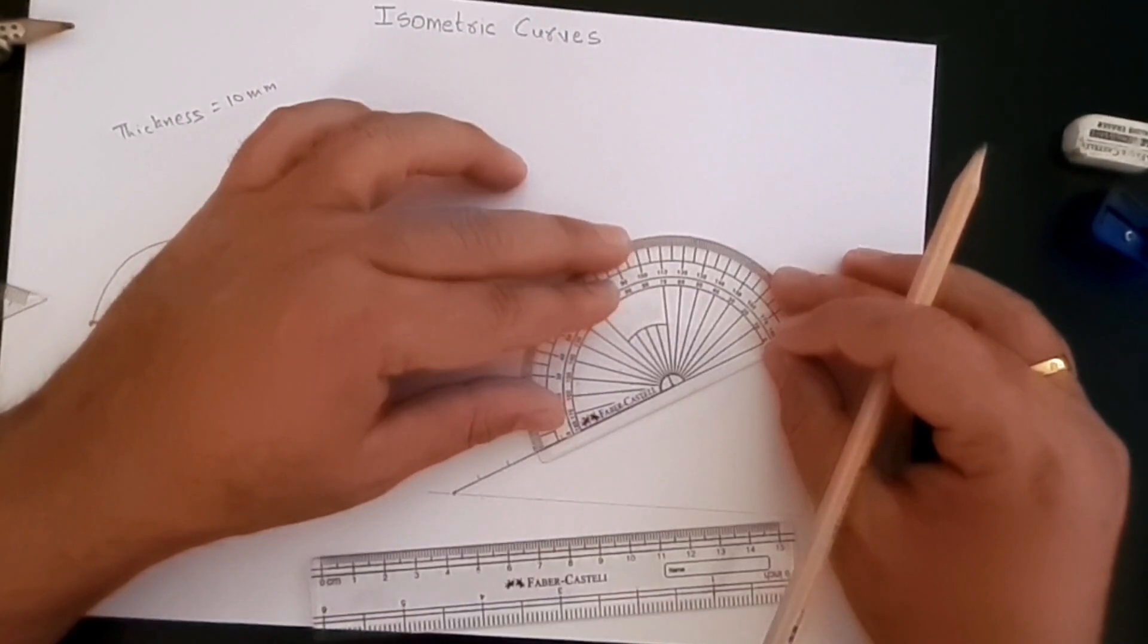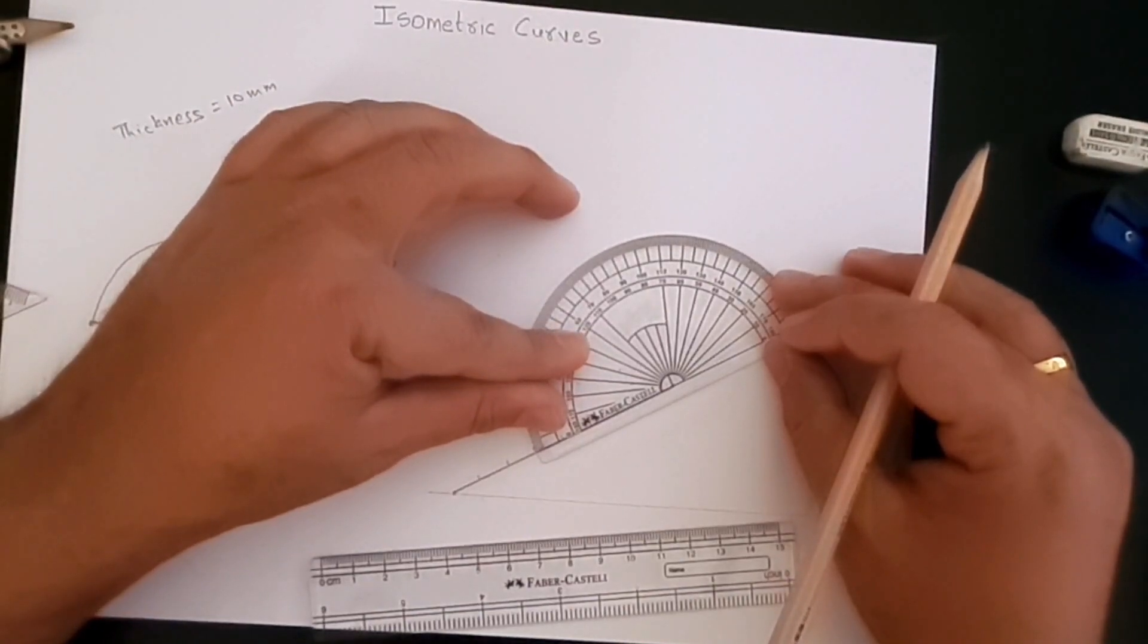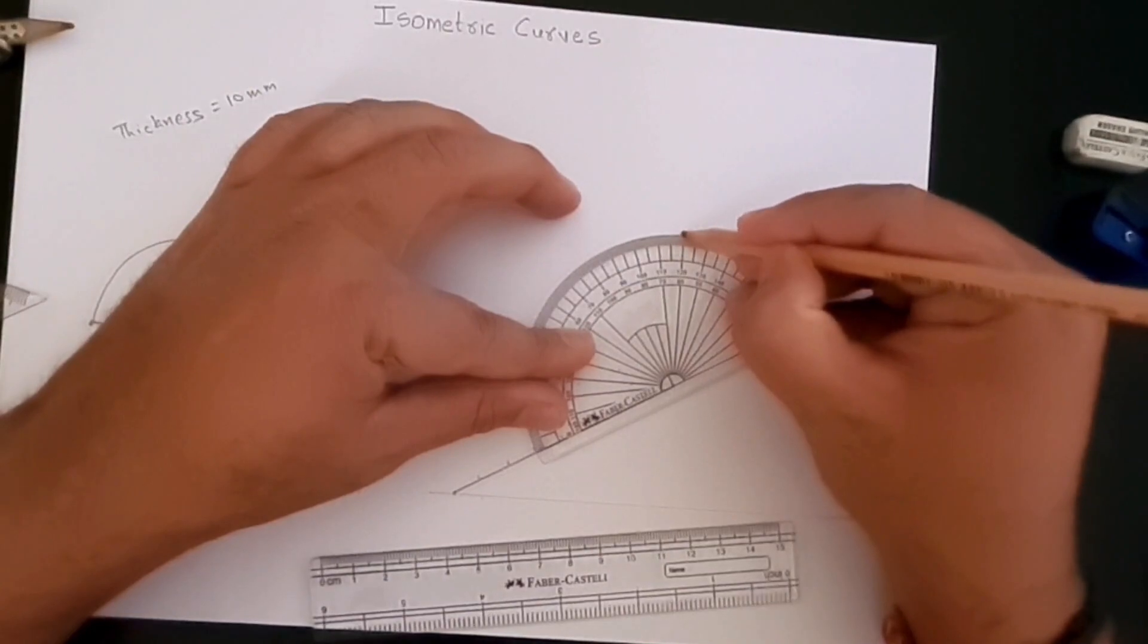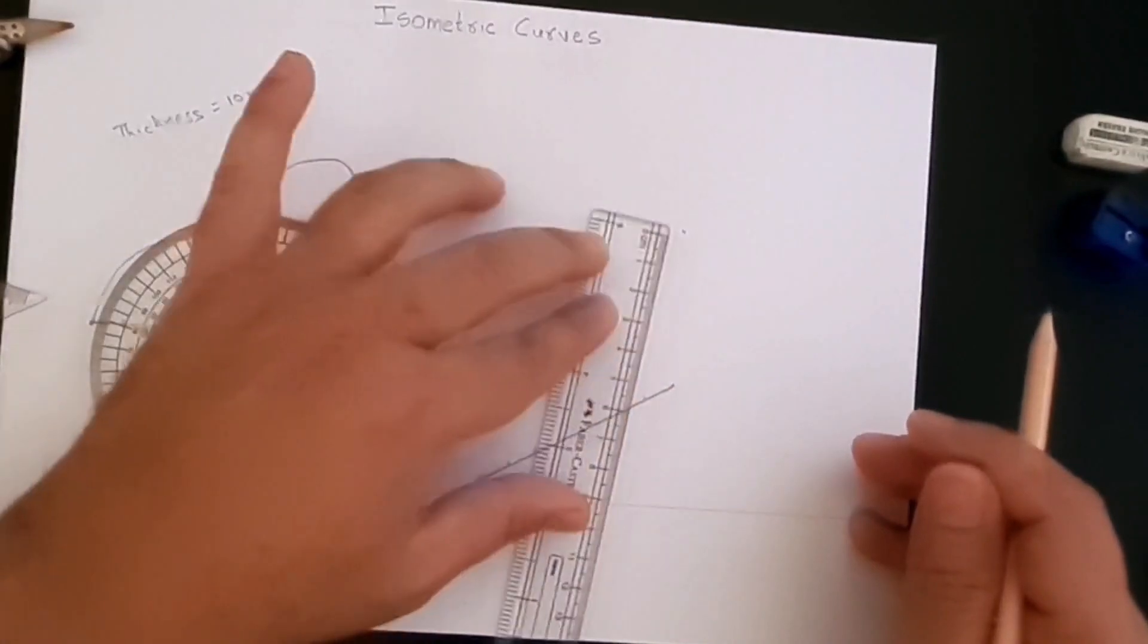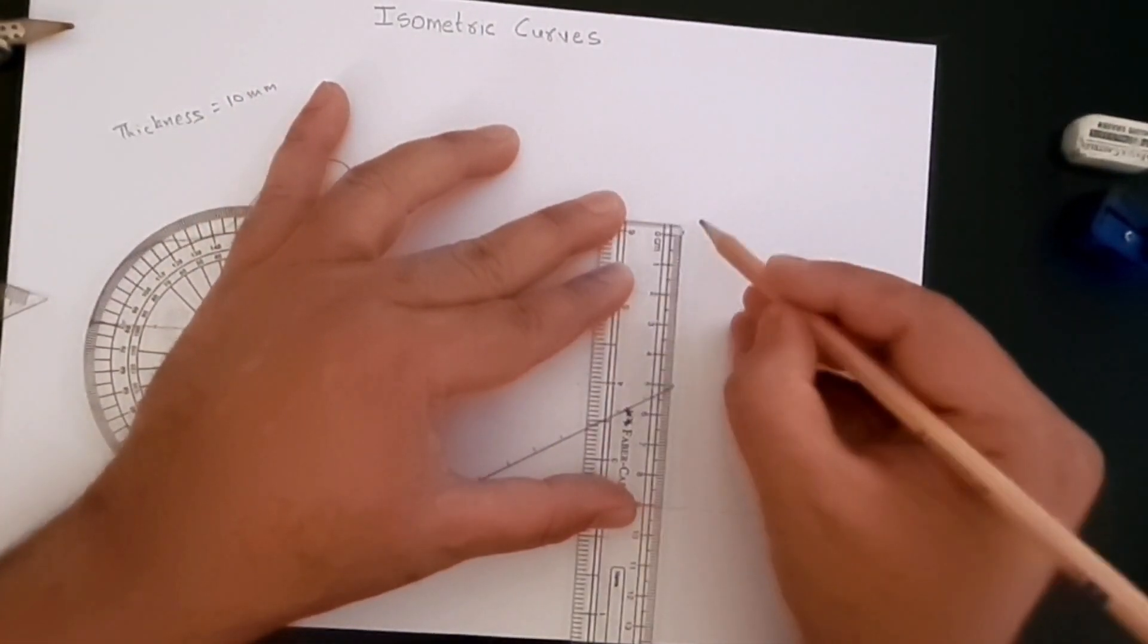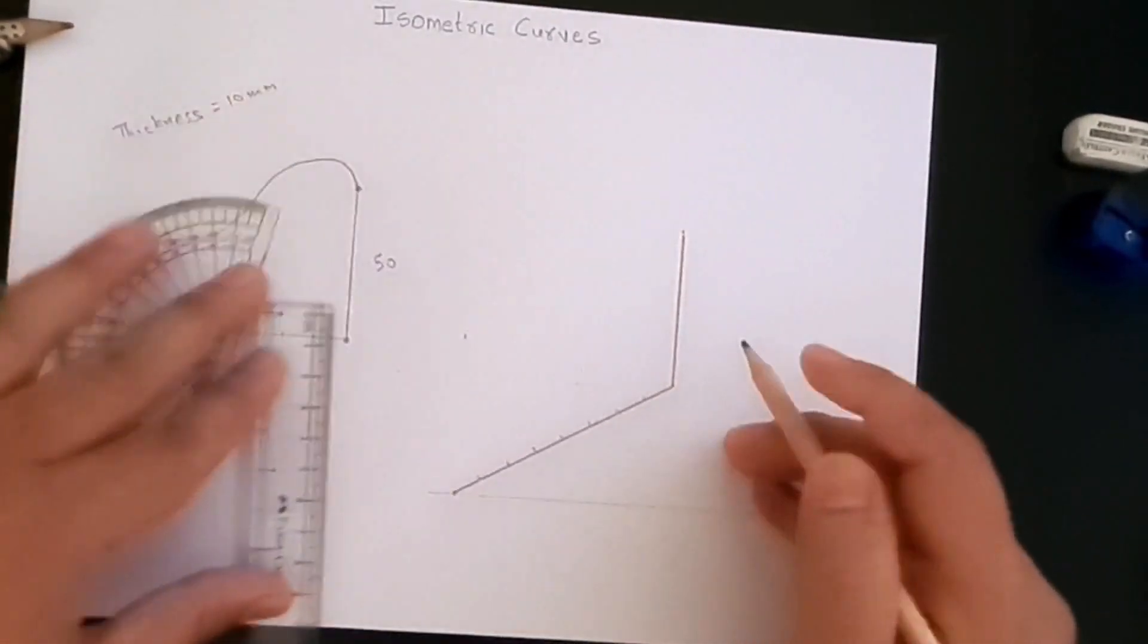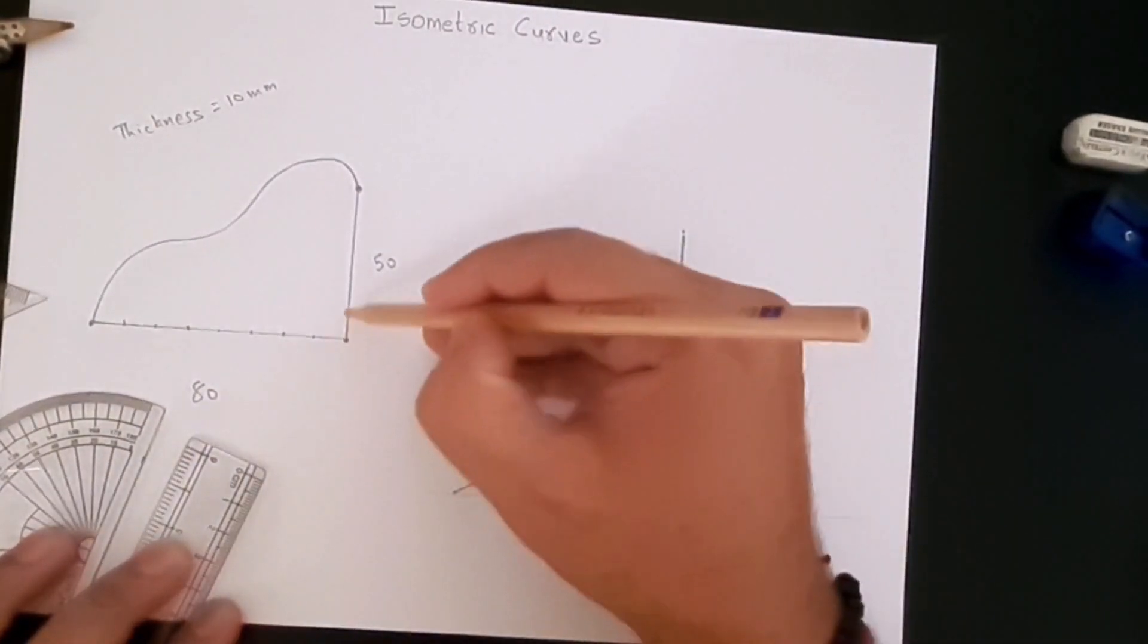Now here we'll need to create a line which is at 120 degrees, which will give us the 50 height. So let's create a line which is at 120 angle from this line, and we'll make this line 50 millimeters. So we have our length and we have our height here.